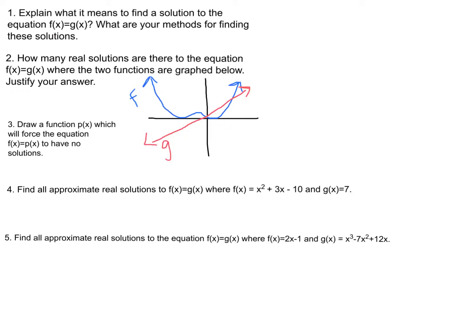For number two, of course, going off what we just talked about, it's where the functions intersect. Now, they're never going to intersect out here. They will intersect once here and once here. So they'll have two solutions based on the fact that they're going to intersect twice.